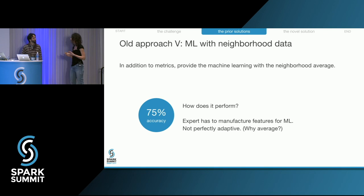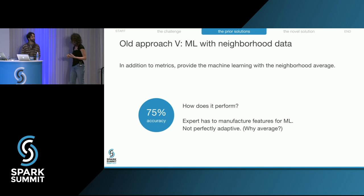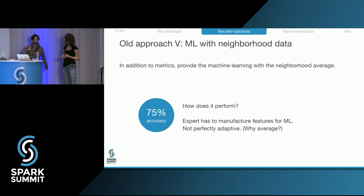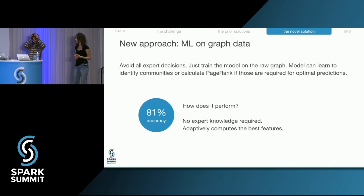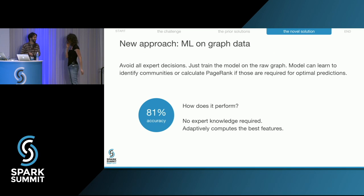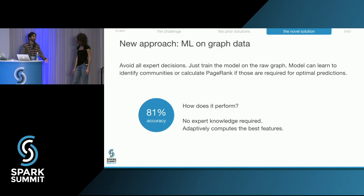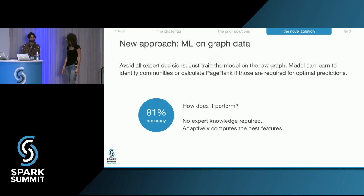We've developed a new approach that has all the benefits of machine learning but can also consume raw graph data — the vertices, edges, and attributes. It achieves an accuracy of 81%. I didn't pick any predictors or fine-tune anything — I just ran a neural network model on the raw data to get predictions.